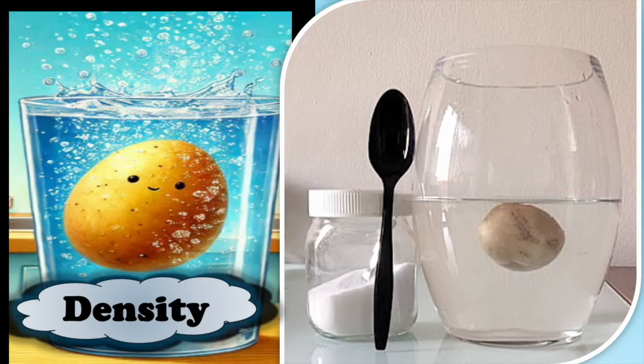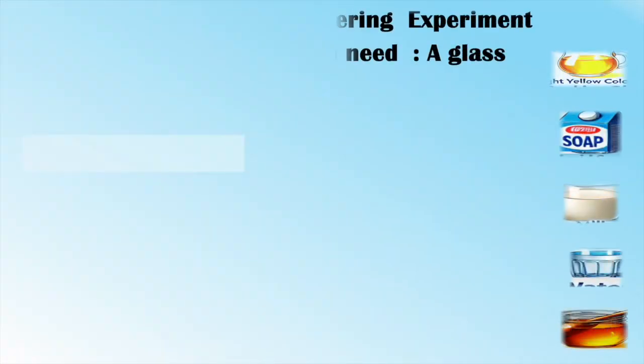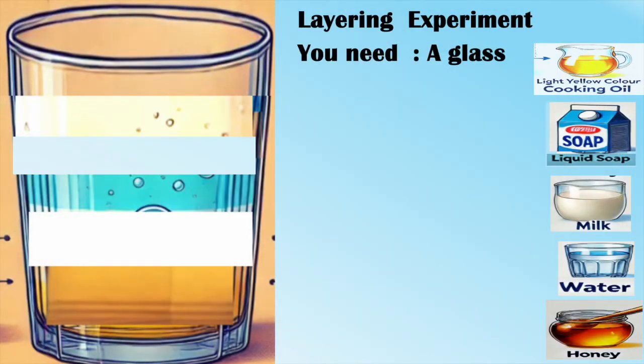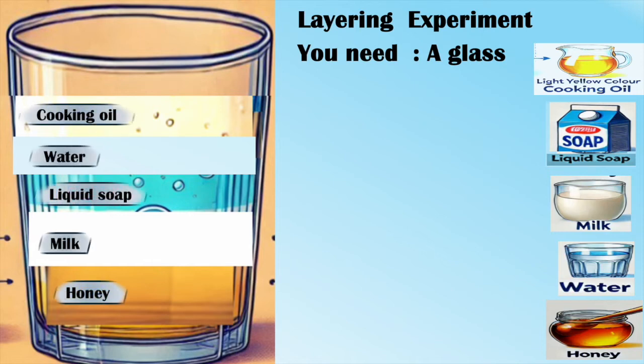hold and push the Photo to float. One more experiment you can do is the layering experiment. For that, you need a glass, honey, water, milk, liquid soap, and cooking oil. In a glass, carefully pour each liquid starting with honey, milk, liquid soap, water, and oil in order. Pour slowly to avoid mixing. The liquid forms layers based on their density.